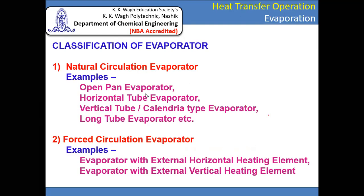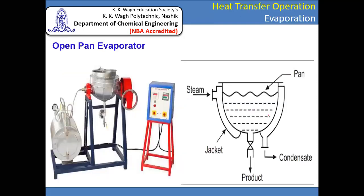Examples of natural circulation evaporators are: open pan evaporator, horizontal tube evaporator, vertical tube or calendrier type evaporator, and long tube evaporator. In the forced circulation evaporator, examples include evaporators with external horizontal heating element or external vertical heating element — that element being a shell and tube heat exchanger. If the evaporator comprises a horizontal or vertical shell and tube heat exchanger with pumping arrangement, these are forced circulation evaporators.